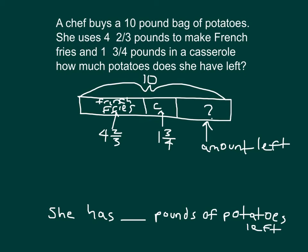This is a multi-step word problem, and I've drawn that picture to help figure it out. The amount I'm looking at right now is the amount of potatoes she uses in making the french fries and the casserole. As you can see from the bar model, we are going to add those two amounts together: four and two-thirds plus one and three-fourths.